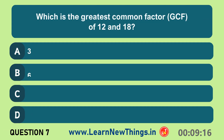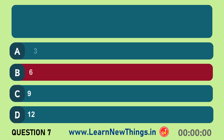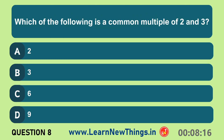Which is the greatest common factor of twelve and eighteen? Six. Which of the following is a common multiple of two and three? Six.